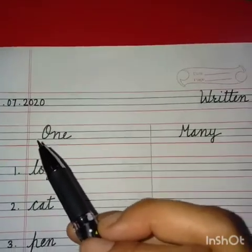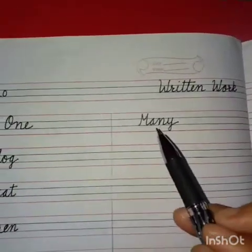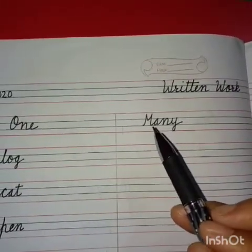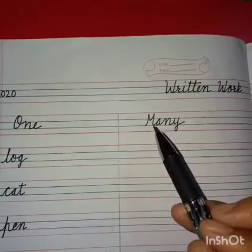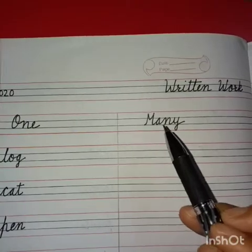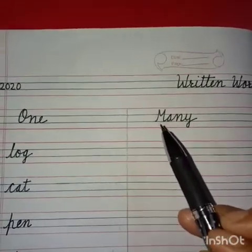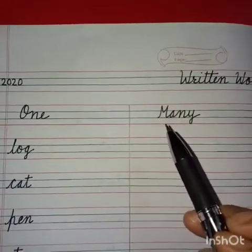We will write heading 'One' and 'Many.' O should be capital — O-N-E — One. Many: M-A-N-Y. M should be capital.